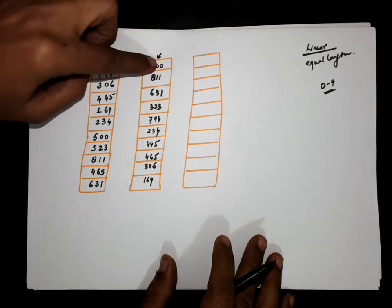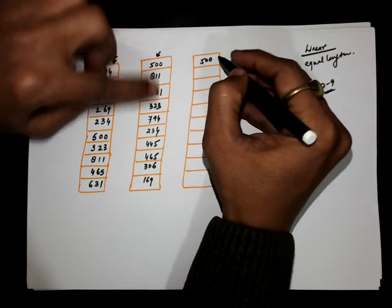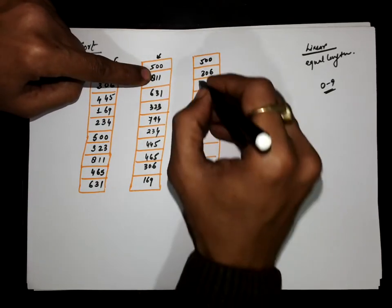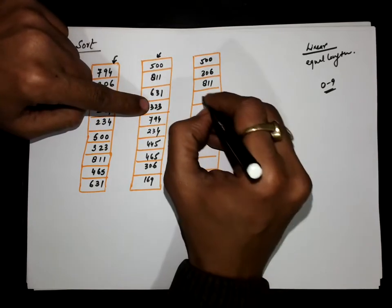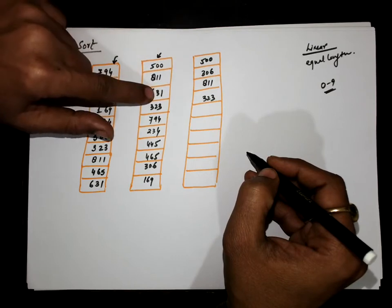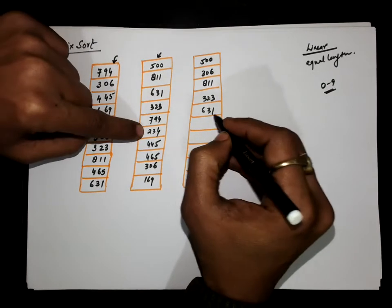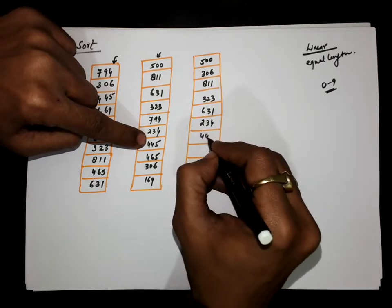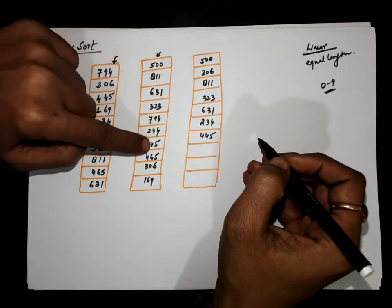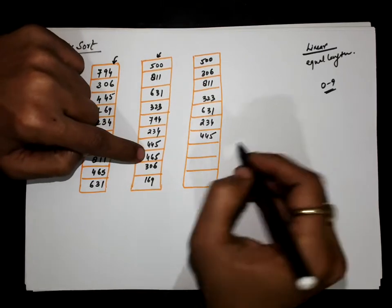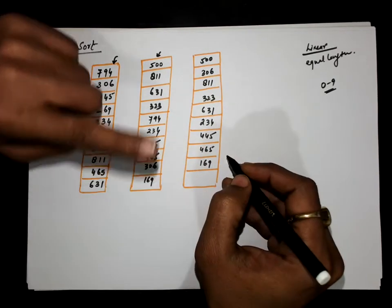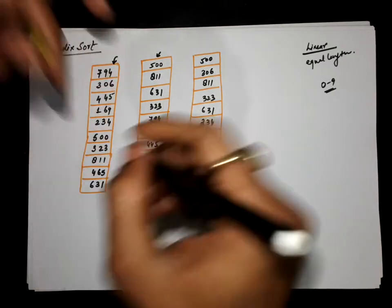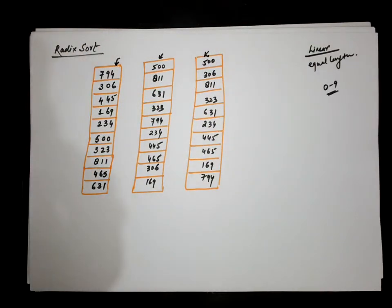Now we do the sorting with the second last radix — the tens position. There are two zeros: this one is taken first, then 306. For one, only one: 811. For two, we have 823. For three, there are two threes — this one first, then 631. For four, there is 145. For six, there are two sixes — 465 first, then 169. For nine, there is 795.